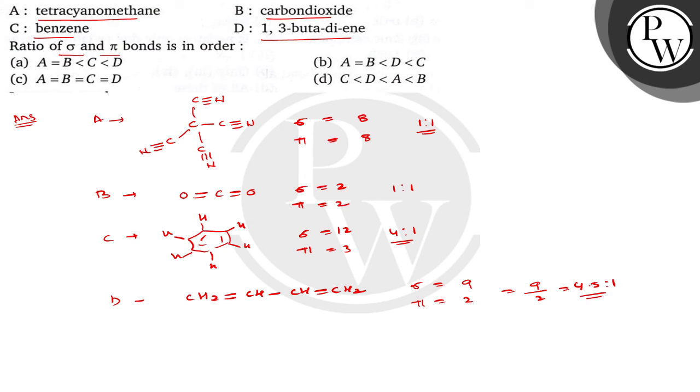So bachyo, here if you see the order of the ratio of sigma and pi bond, the highest is for D. Then it is for C and A is, B is C. So this is the order of sigma and pi bond ratio in the following order. So this is given in the correct option A. I hope you understood well. Best of luck.